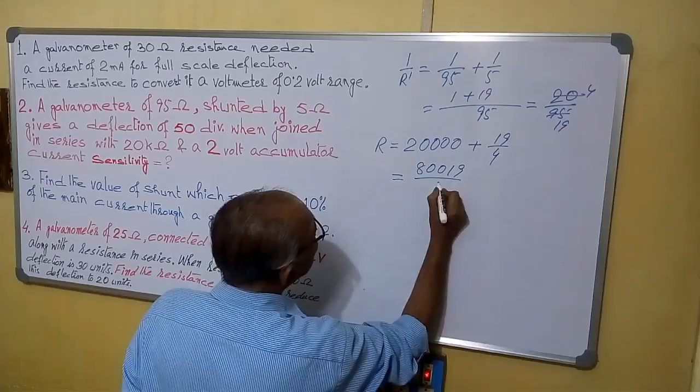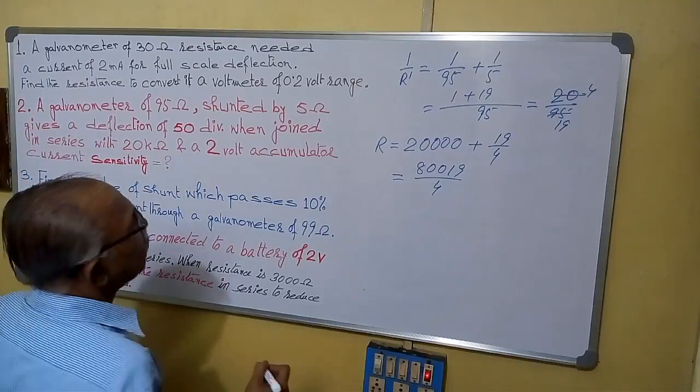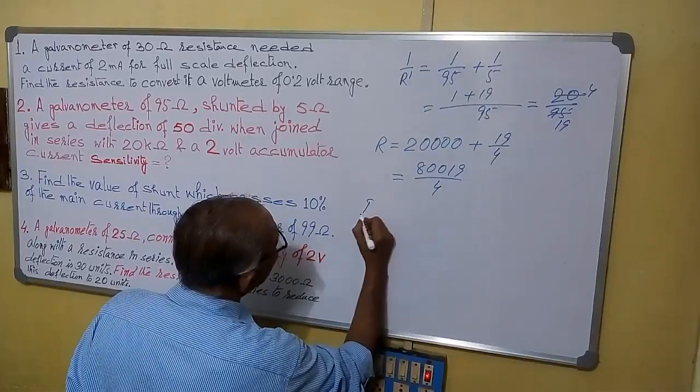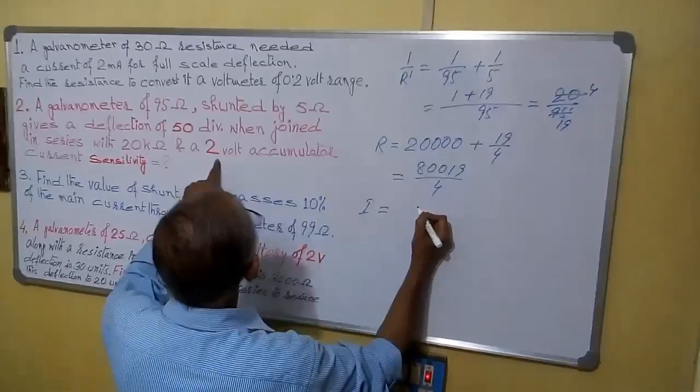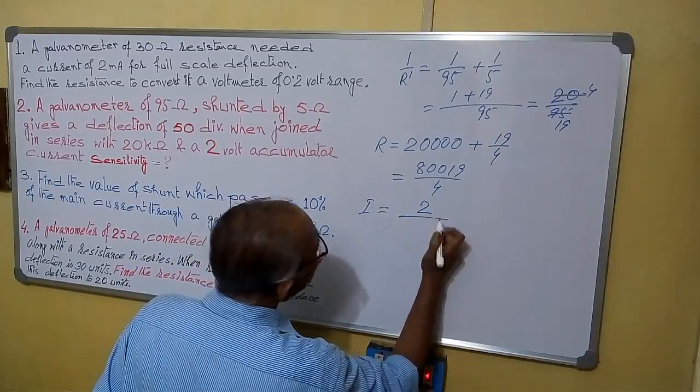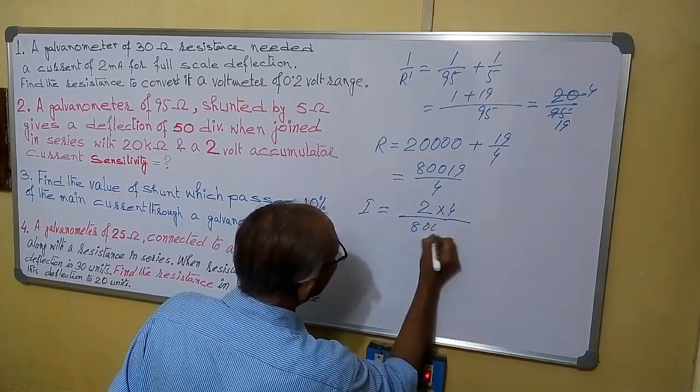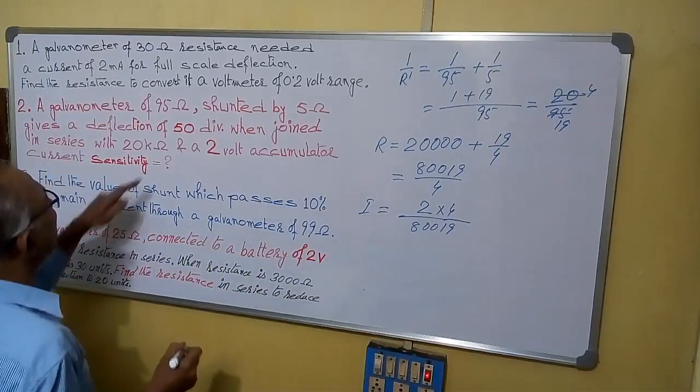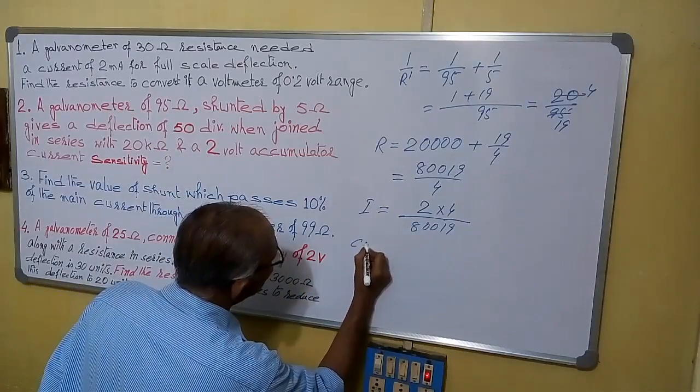And the 2 volt accumulator. So now we have to find I. I equals to V by R, that is 2 by R, that means 2 into 4 by the total resistance. Now current sensitivity: it is giving 50 division, so current sensitivity equals to 50 divisions.